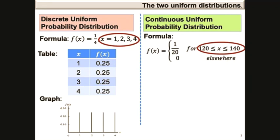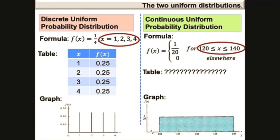Since an infinite number of x values can be observed in the interval, it's not possible to draw a table of probability distributions for each x value. However, a graph of the probability density function values versus the x values can be drawn as illustrated in this figure. It resembles a geometric shape whose length is the interval of possible x values, going from 120 to 140 on the x-axis. The height is the value of the probability density function f of x on the y-axis, which in this case is 1 over 20.